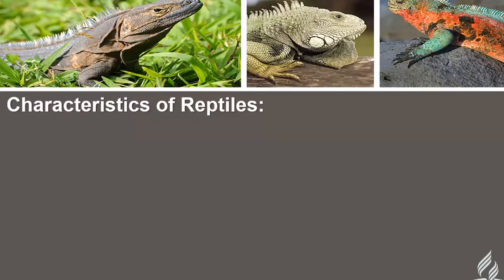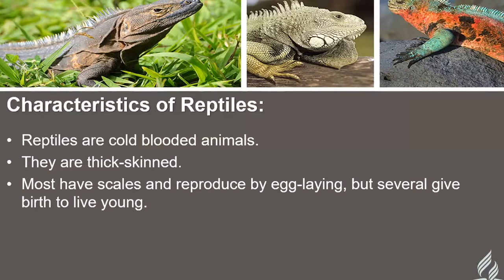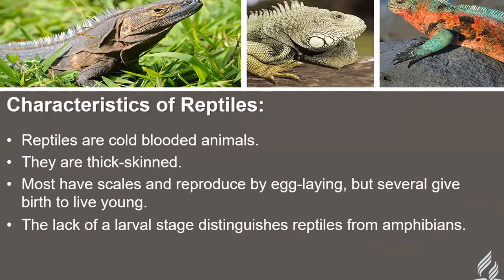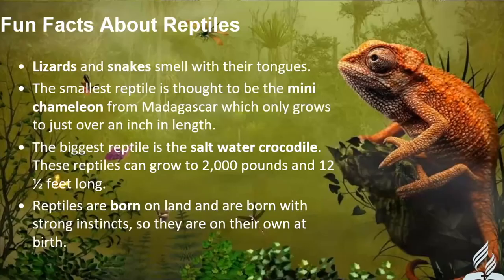Let's go straight into it — characteristics of reptiles. As I always teach my students, because I'm a teacher, reptiles are cold-blooded animals. They are thick-skinned, most have scales, and reproduce by egg-laying, though several give birth to live young. The lack of a larval stage distinguishes reptiles from amphibians — frogs are cold-blooded too, but these are some distinct features that bring a difference regarding reptiles.